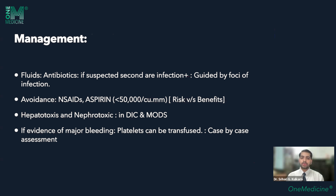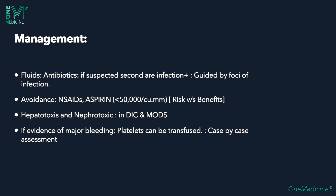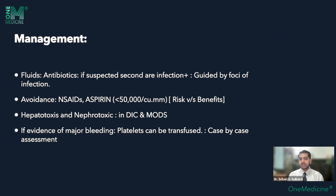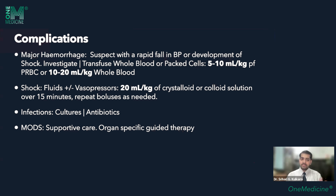Give antibiotics if secondary infection is suspected, based on the foci of infection — obtain cultures when indicated. Avoid NSAIDs and aspirin; only consider them if platelet count is less than 3,000 per microliter after weighing risk and benefit. Avoid hepatotoxins and nephrotoxins, especially in DIC and MODS cases with severe dengue. Transfuse platelets only in cases of evidence of major bleeding. The common practice of transfusing platelets for counts below 20,000 has no supporting evidence. Platelet transfusion must be a case-by-case assessment involving specialists. In suspected major hemorrhage with rapid BP fall or shock, transfuse whole blood at 10 to 20 ml per kg or packed red blood cells at 5 to 10 ml per kg body weight.